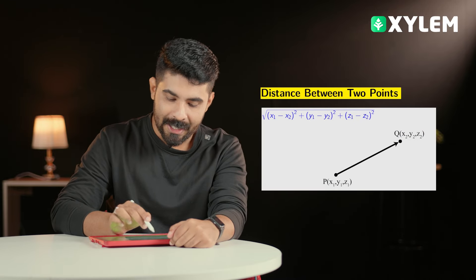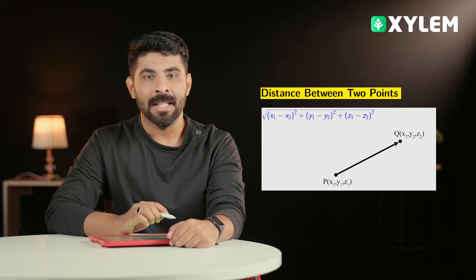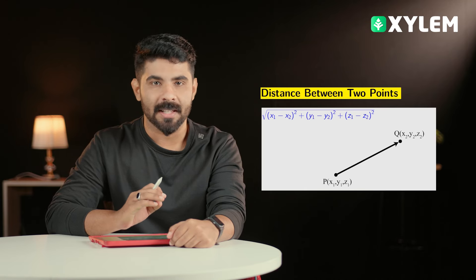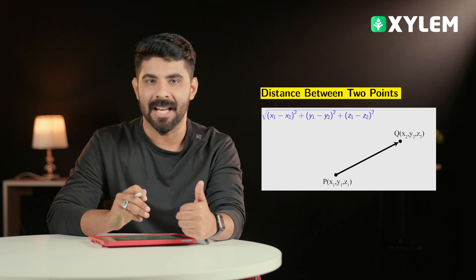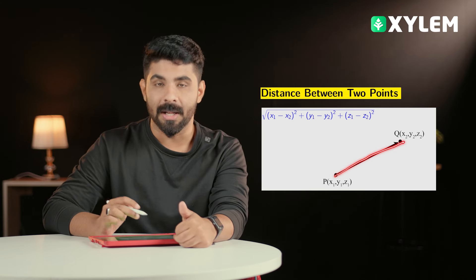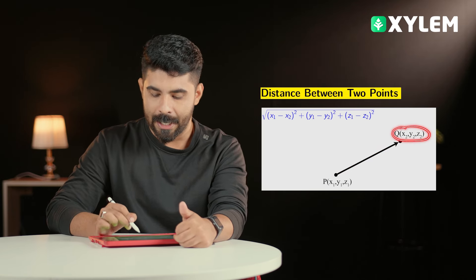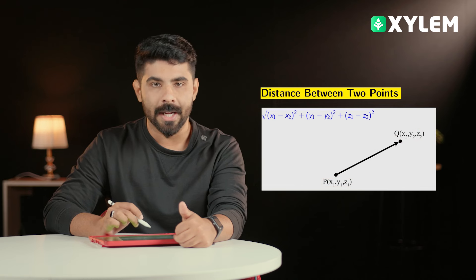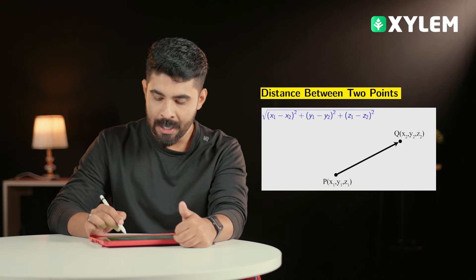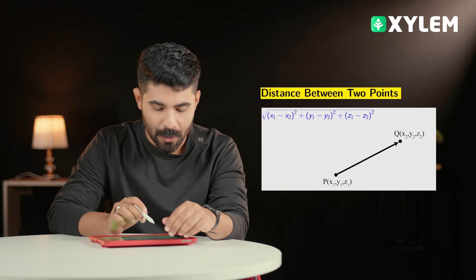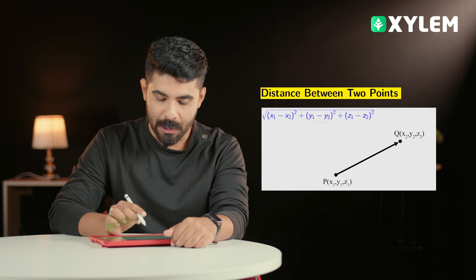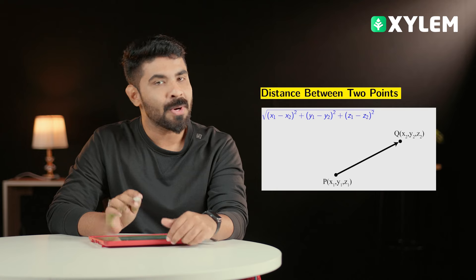The first formula we are going to cover is Distance Between 2 Points. We have already discussed this in the straight line, but it will be easier to compare it in 3D. So we have two points with three coordinates in space. The distance is the root of (x1 minus x2) whole square plus (y1 minus y2) whole square plus (z1 minus z2) whole square.